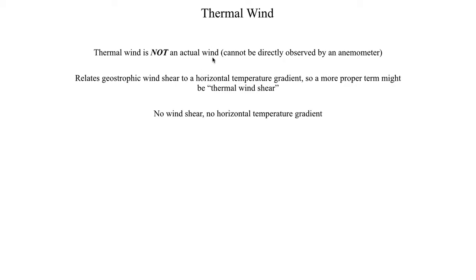This is something we'll explore in greater depth later on, but if you've got no vertical wind shear, then you've got no horizontal temperature gradient. We'll talk more about that when we get into the idea of a barotropic atmosphere. But just to introduce the concept right now: if you've got no vertical wind shear, then you have no horizontal temperature gradient by this concept of the thermal wind.